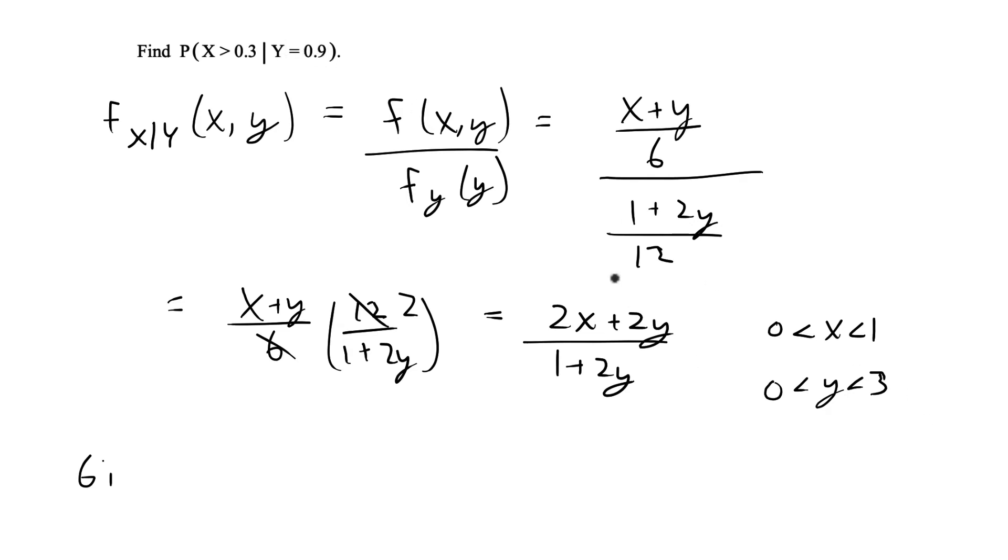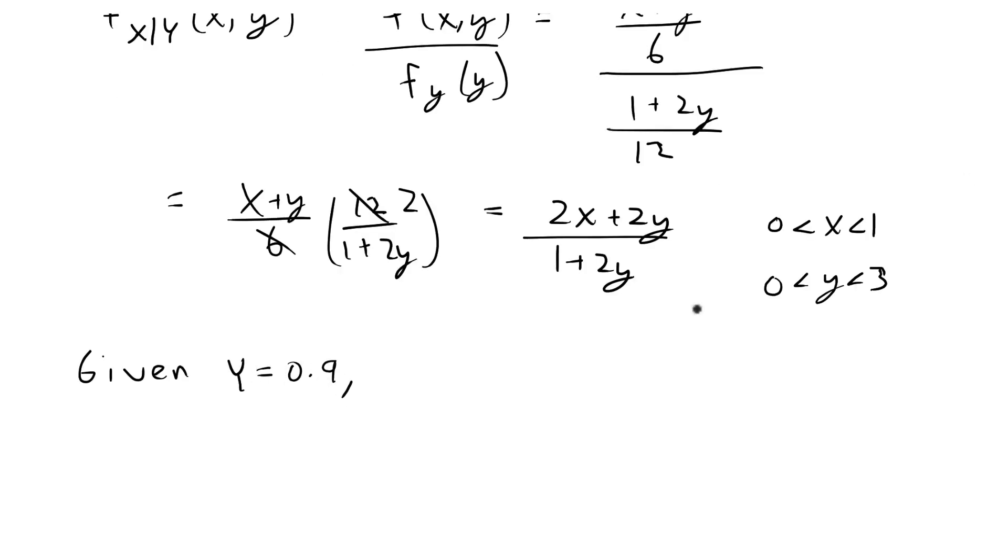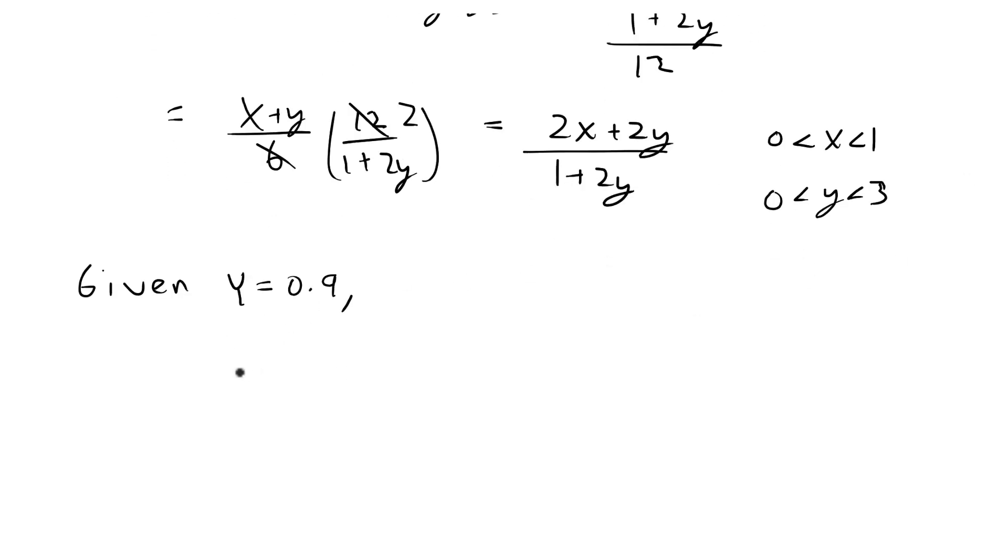I'm just going to plug this into the conditional pdf first. This is just going to be a constant that I plug in. I'm just going to plug in y is equal to 0.9 into the conditional pdf.